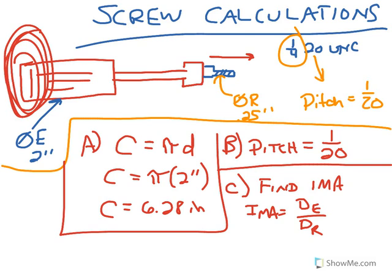So the distance of the effort here, that rotary motion, is one revolution. One revolution is circumference. The distance of the resistance, that linear motion, if you make one revolution of the circumference, that's what the pitch is. This is C divided by P. That's the ideal mechanical advantage of a screw. Circumference divided by pitch.